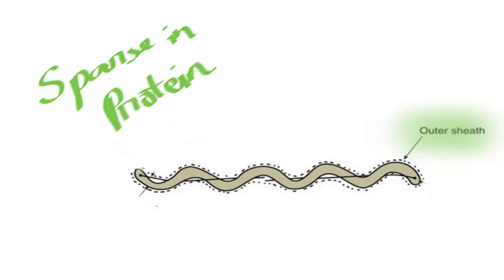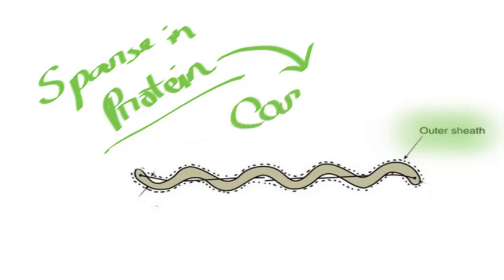Even though more than 100 protein antigens have been noted in Treponemal pallidum and its subspecies, they contain one unique component called Cardiolipin.